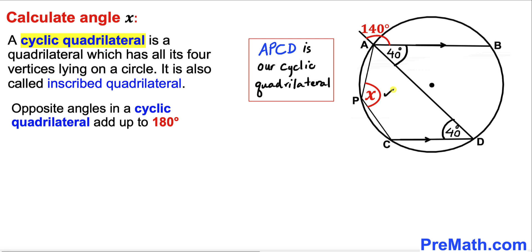Let me go ahead and write down these two angles. I can write angle X plus 40 degrees—they add up to 180 degrees. Let's subtract 40 degrees from both sides. This cancels out.